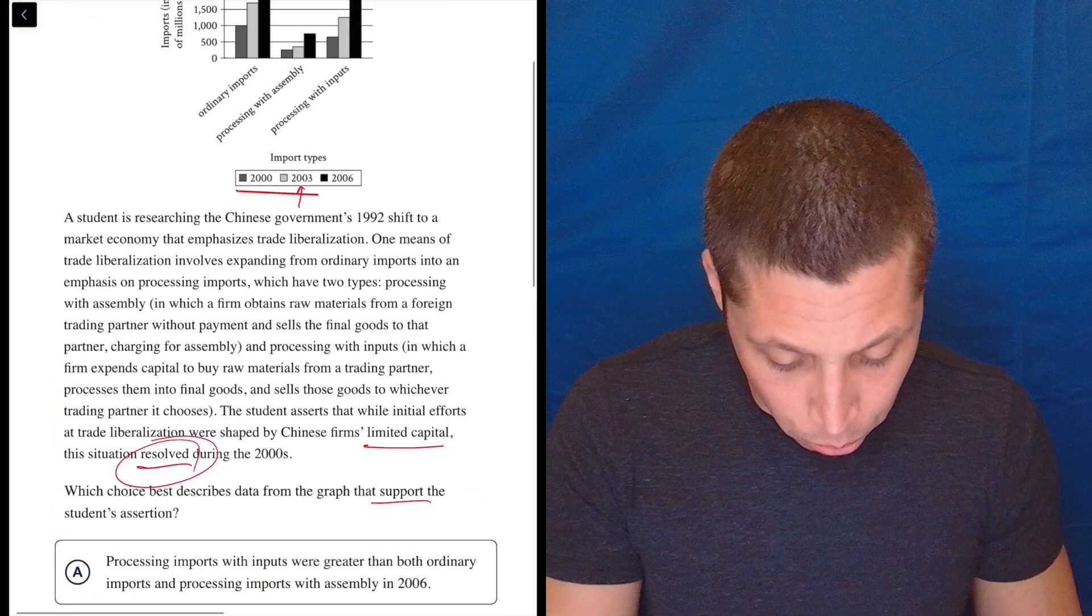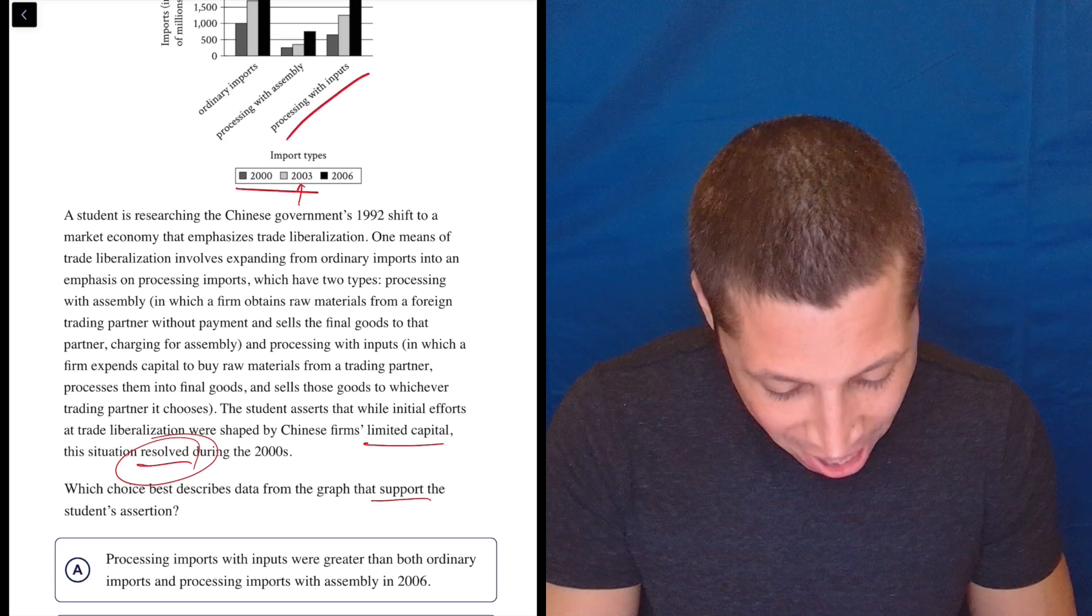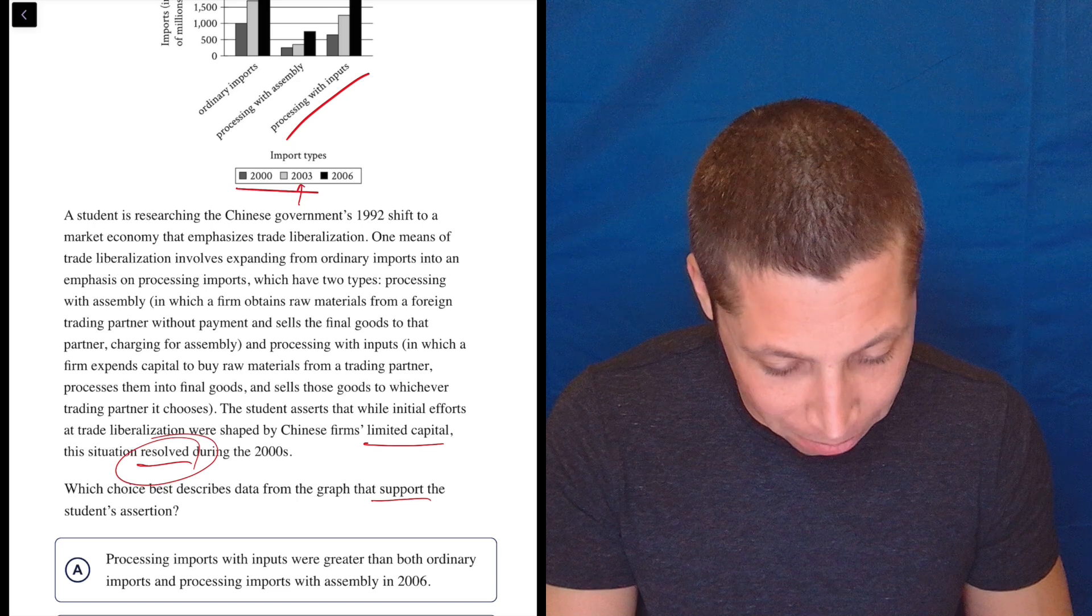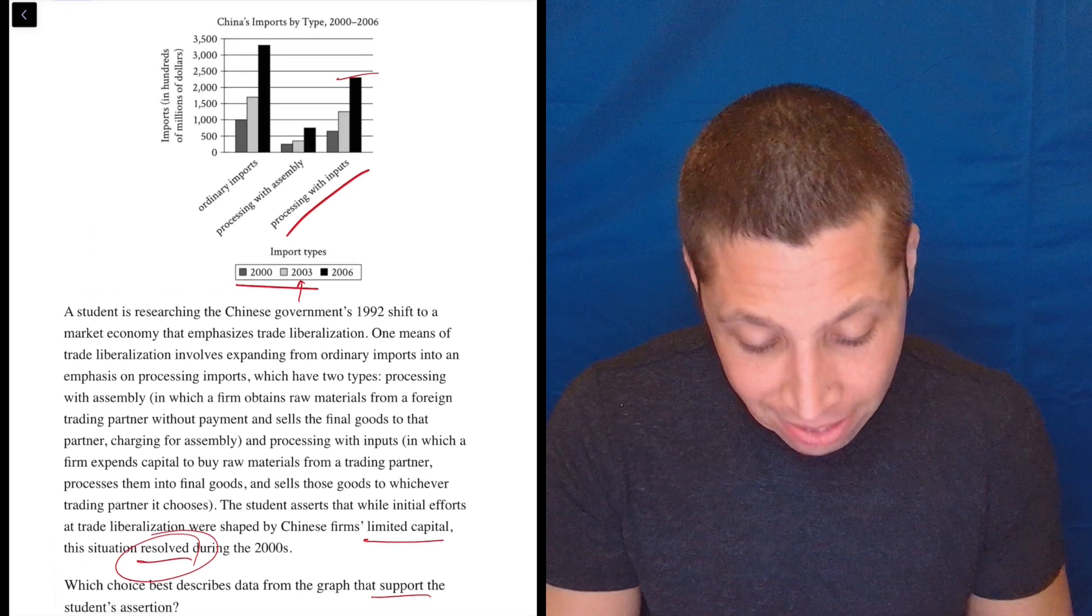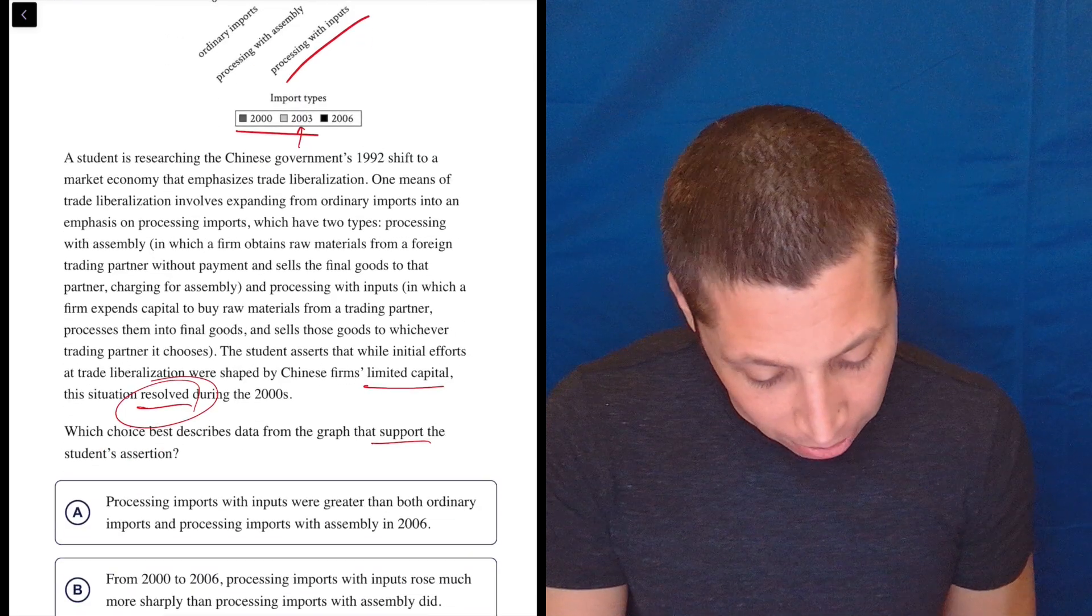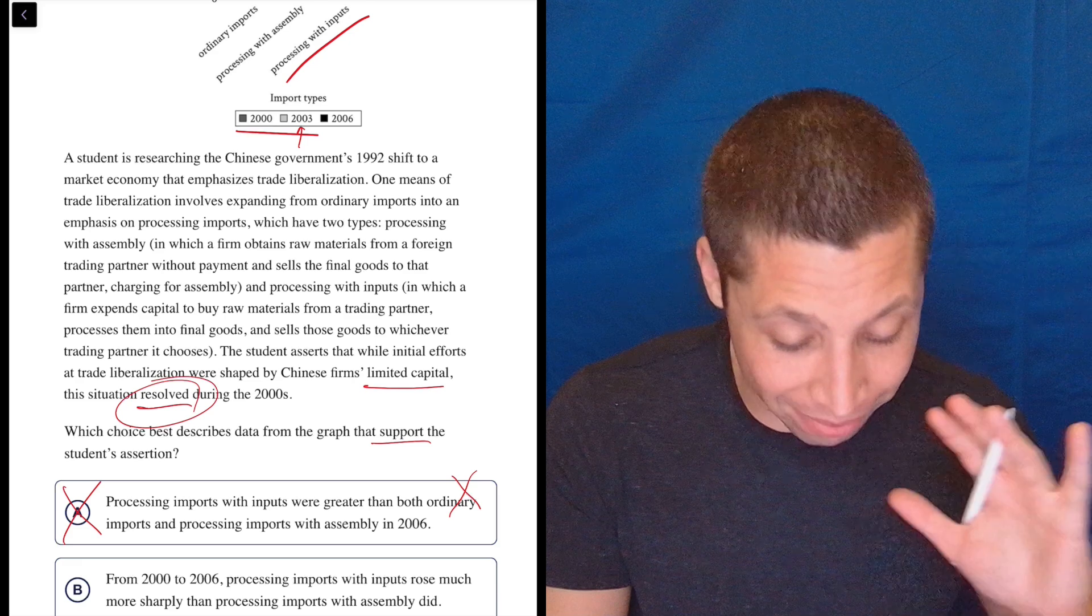So processing imports with inputs were greater than both ordinary imports and processing imports with assembly in 2006. Well, that's just not true, right? That bar is not taller than the ordinary imports one. So that's just false. And so thank God we can get rid of that without really having to think deeply about it.